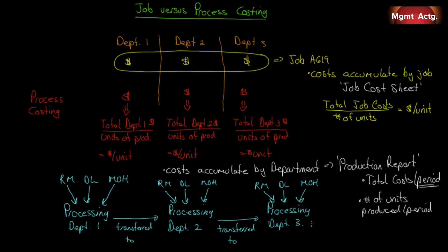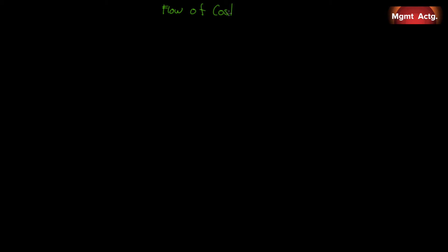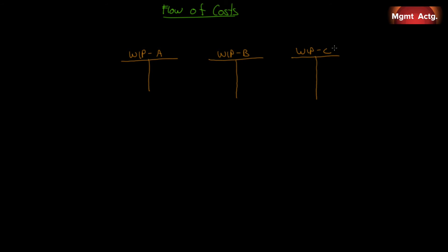All three manufacturing costs can be added at any level. Once they leave processing department three, they're done and transferred to finished goods inventory — the same accounts as before, with one key difference in work in process. With job costing we have one work in process account; with process costing we have a work in process account for each department — work in process for department A, B, and C. We still have raw materials, direct labor, and manufacturing overhead costs, and combining direct labor and manufacturing overhead gives us conversion costs.